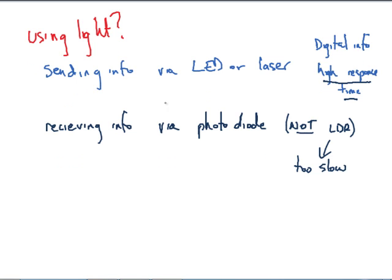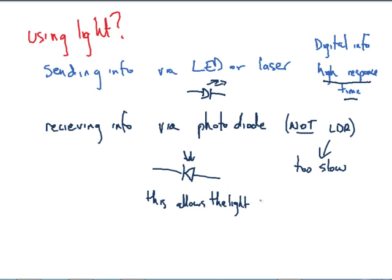So we have our LED giving light off. The photodiode must be attached to the circuit in reverse bias. For - this allows the lights to vary the current. So that's probably really the key bits of info that we need to remember for electronics and photonics.